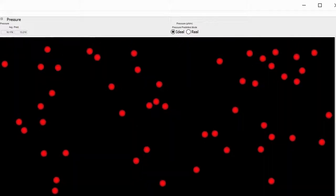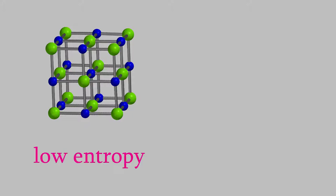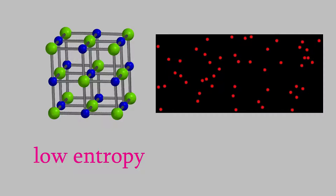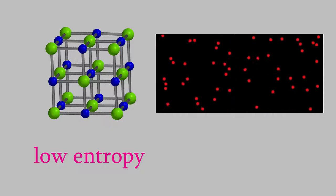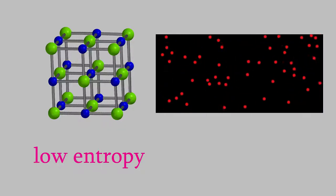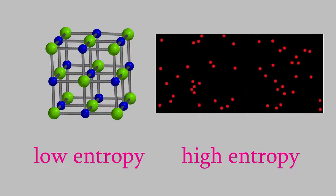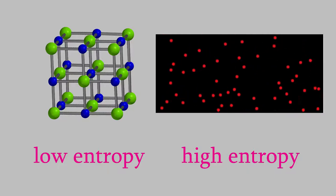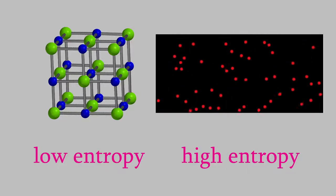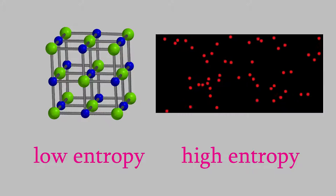In these examples, the solid has a low entropy because the molecules are arranged in a pattern that has a very small amount of disorder. On the other hand, the molecules in a gas can be in any random location in the container, so gases have a much higher entropy than solids or liquids. So the entropy depends on the phase of the molecules.